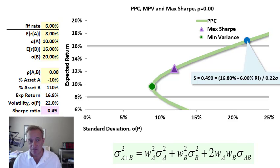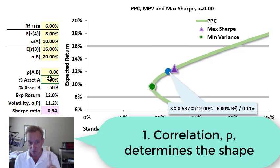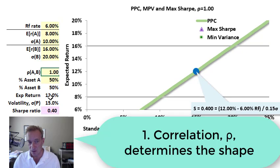I'm going to go back to 50-50 and just summarize four things I would say about this portfolio possibilities curve. One, correlation - correlation determines the shape. I have a correlation assumption here of zero, but if the correlation were one, this is the perfect correlation case where there is no benefit to diversification.